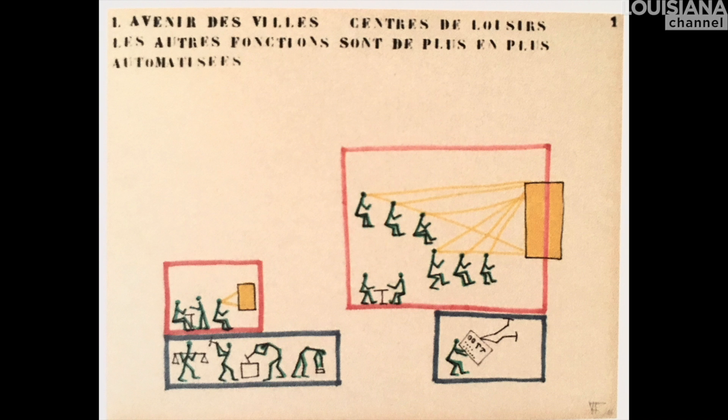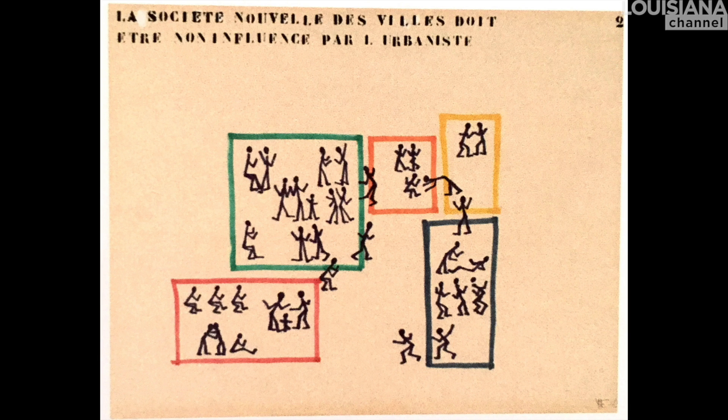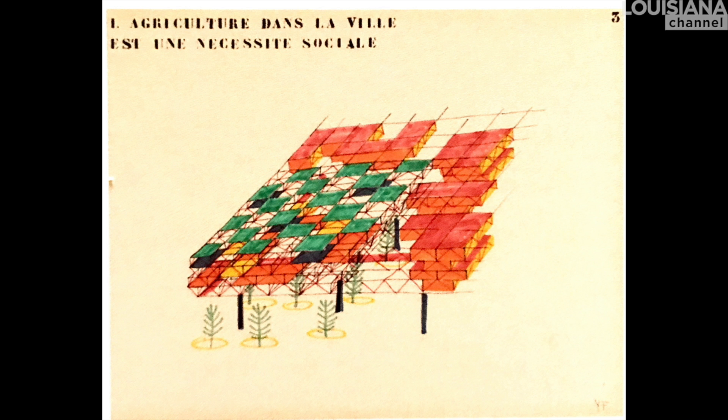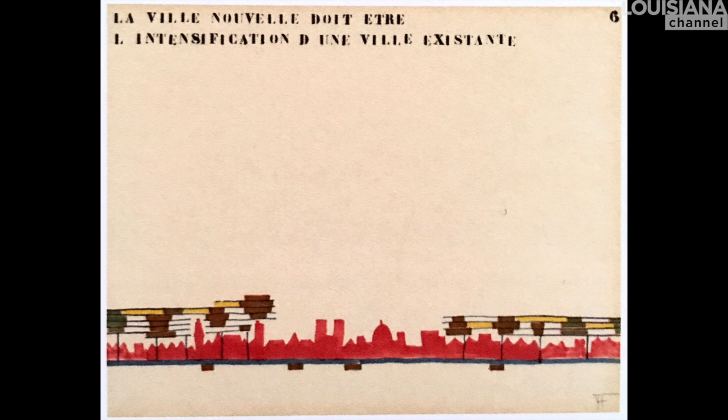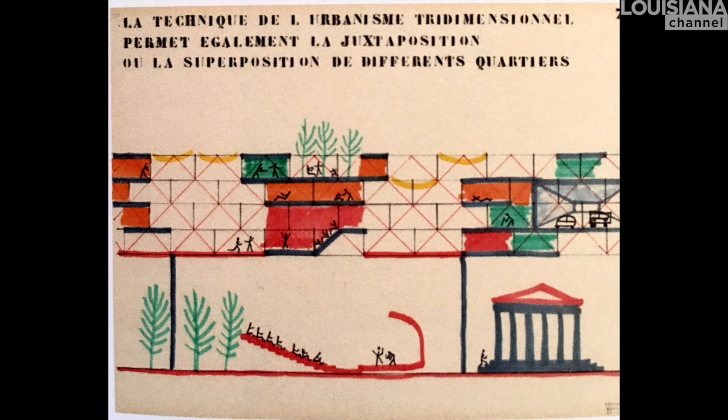Trial and error might be very expensive processes, so you have to invent ways that it shouldn't be expensive. That means technically simple and inexpensive. This was the start of mobile architecture — how can I make it so the house can be transformed as much as possible with the technical means available to everybody?